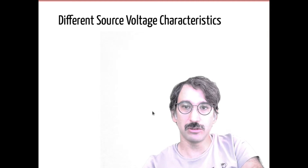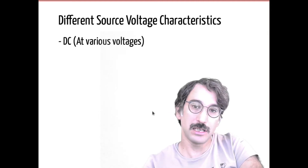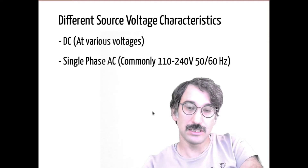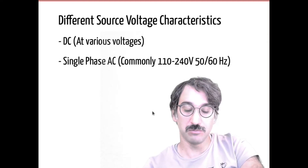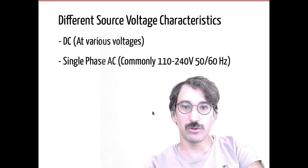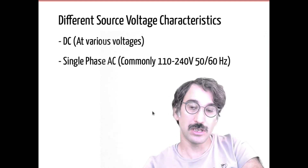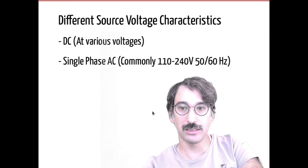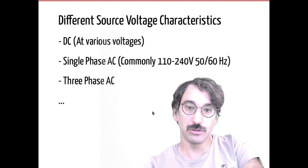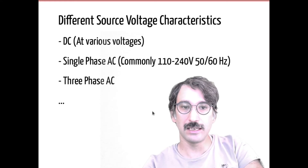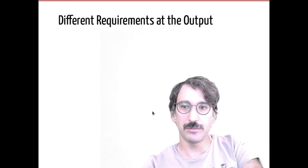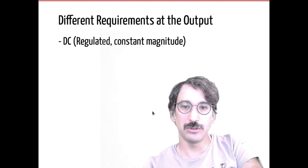We can have different voltage characteristics at the source. For example, we can have DC voltage at various voltages as an input. Most of the time you might use systems with your house voltage — either 230 or 110 volts if you are living in the US or Japan — or you can have a three-phase AC input as well.